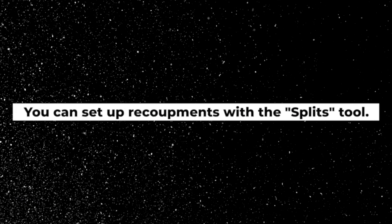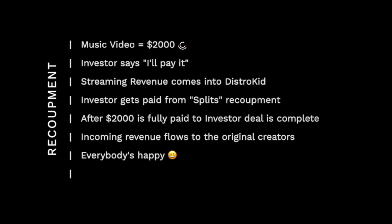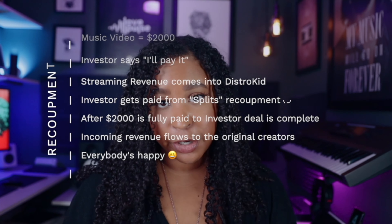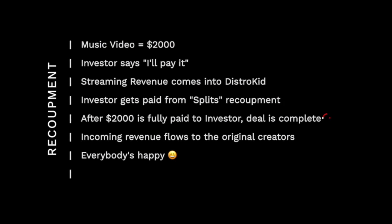Not only can you make split arrangements with your producers, songwriters, and whoever else is owed money as it comes in, you can also set up recoupment deals with the splits tool. For example, say you want to do a music video and you can't quite afford it on your own. Maybe somebody gives you $2,000 upfront and says, 'Hey, I know you don't have it right now, but once you release your music and streaming revenue starts to come in, pay me back my $2,000.' So you can set up that recoupment deal on DistroKid. Basically what it will do is make that person a priority temporarily — they'll be the only person getting paid until they've recouped their full $2,000. Then after that, the system goes right back to paying all of the original creators their correct splits.